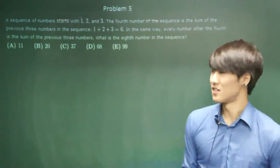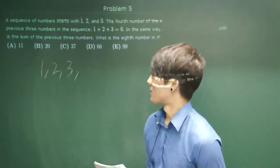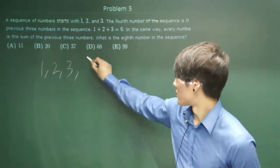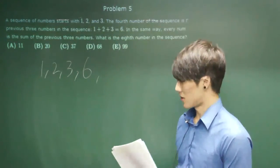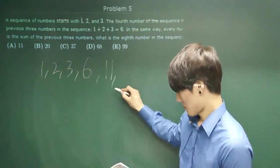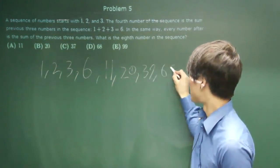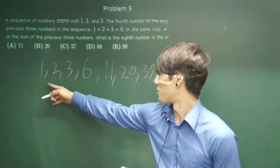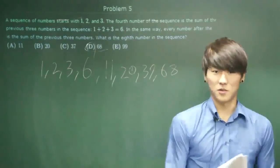So it's addition. One, two, three. You add the previous three to get six. Then you add the two, three, and six to get eleven. Then 20, 37, 68. That's the eighth number. One, two, three, four, five, six, seven, eight. And that's choice D.